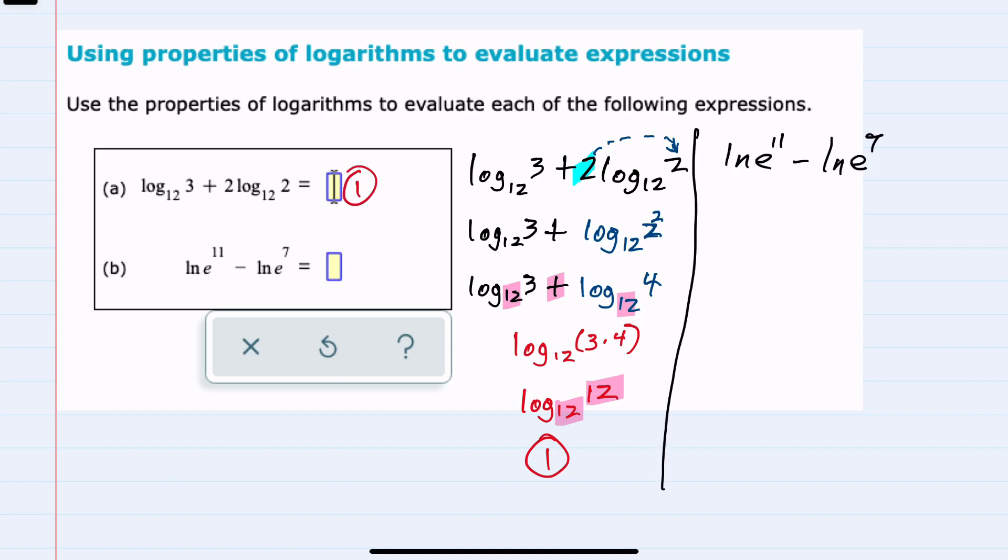For expression B, we have logarithms with the same base, natural logarithms, being subtracted. And that means that I can combine that into a single log.